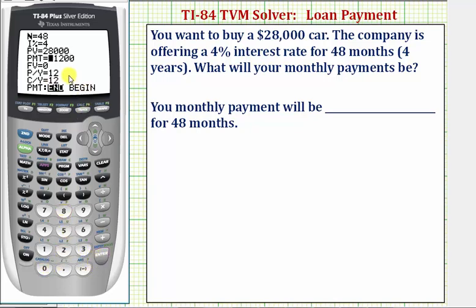We'll come back to the payment, so we press Enter for now. The future value of the loan after the 4 years would have to be zero. So we leave the future value at zero and press Enter.